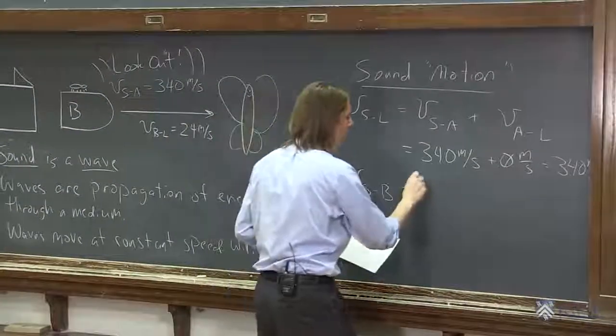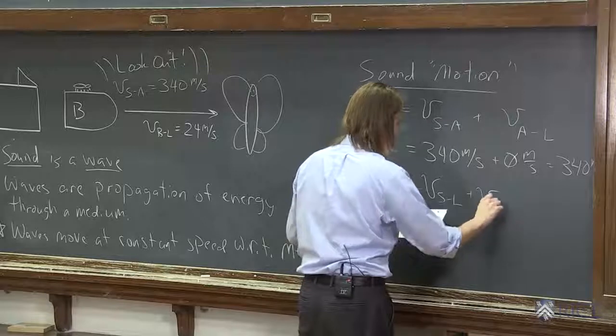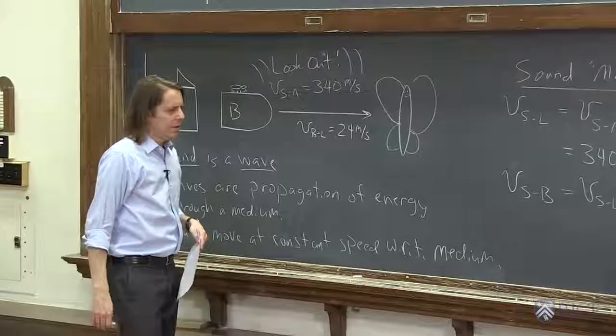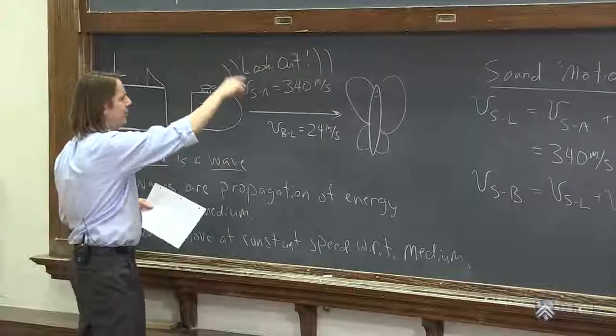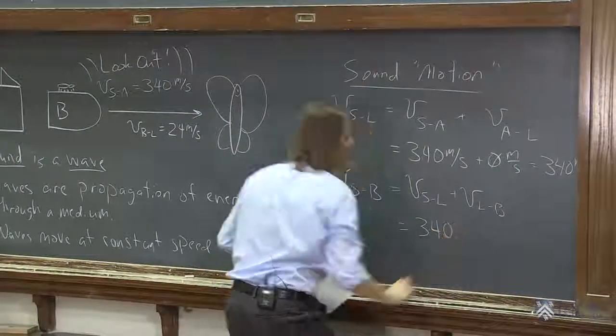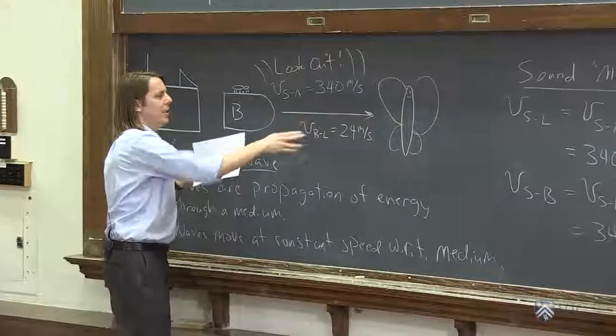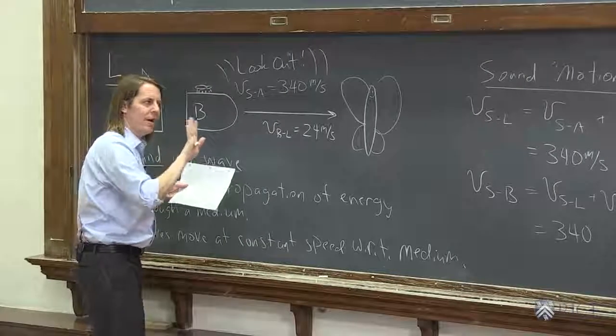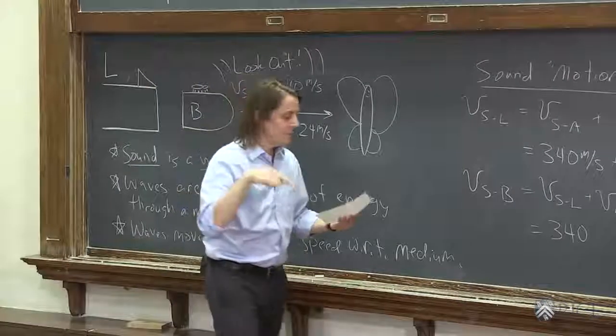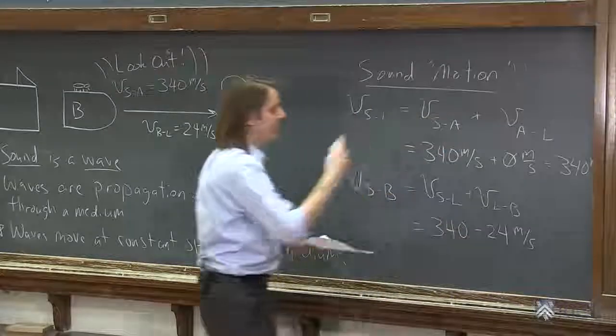Well, we follow our rule. We want the velocity of the sound in the lab frame plus the velocity of the lab in the bullet frame. The velocity of the sound in the lab frame, we decided was 340 because the air in the lab are the same thing. What's the velocity of the lab in the bullet frame? Well, bullet in the lab frame is 24 meters per second. We define 24 as positive this way. You really got to imagine you're in the bullet frame. What do you see? You see the lab moving back. So you actually subtract 24 meters per second. It's negative 24 meters per second.